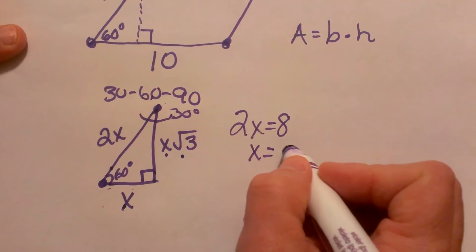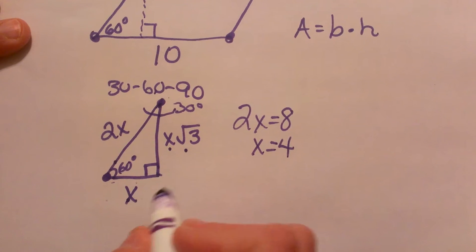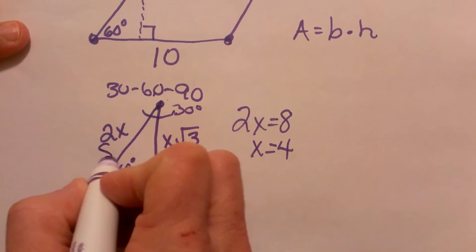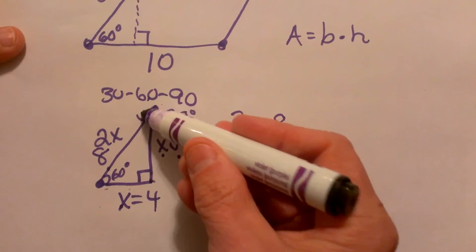So x has to equal 4. That means my short leg is 4 and my hypotenuse is 8, but I need this side.